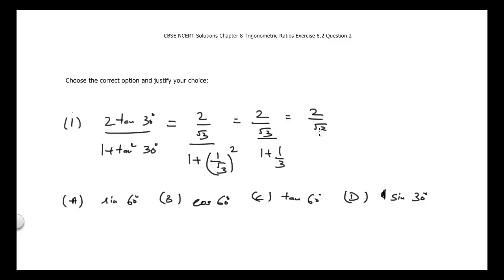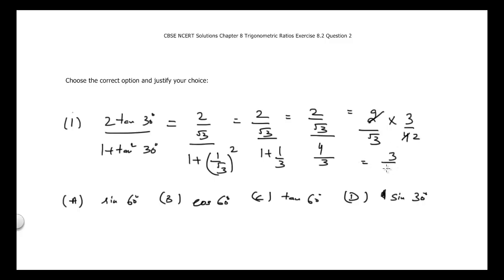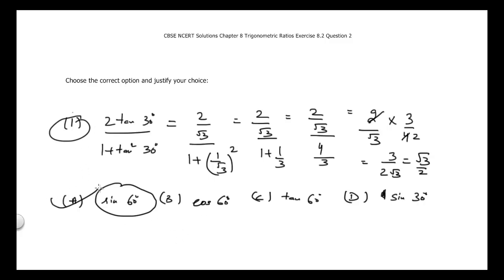So we have 2/√3 divided by 4/3 in the denominator. This becomes 2/√3 times 3/4. The 2s cancel, giving 3 divided by 2√3, which equals √3/2. We know that sin 60° equals √3/2, so the answer for the first part is A.